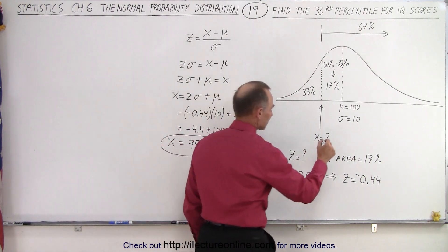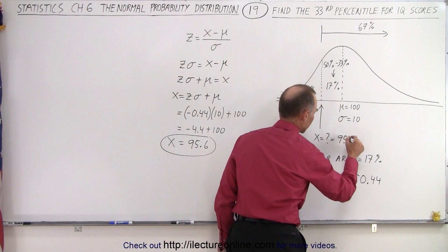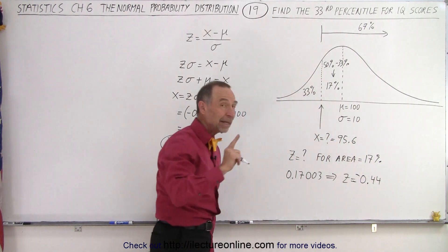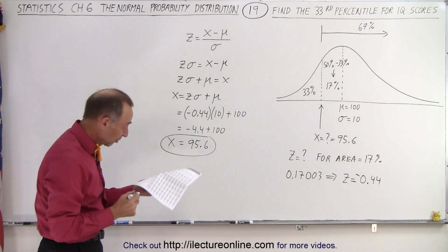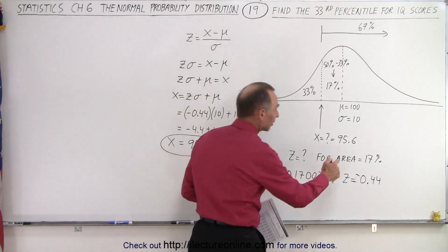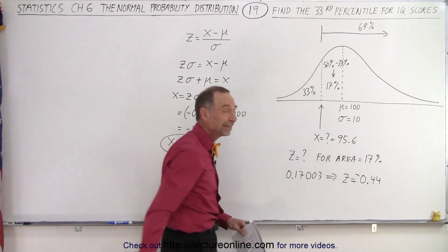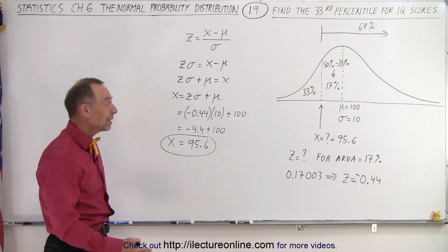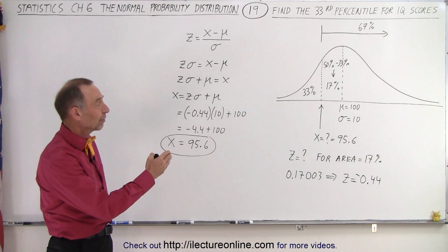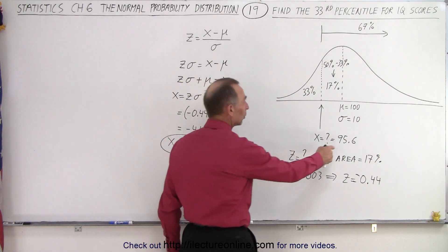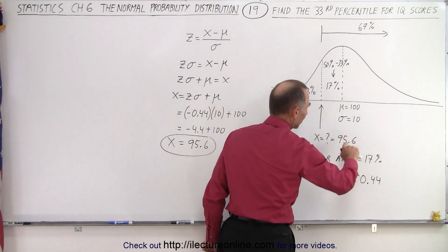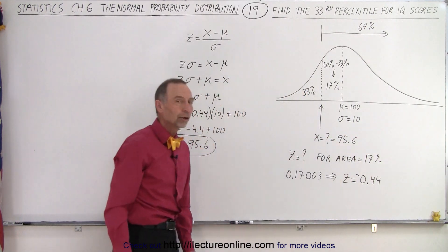In other words, that means that at the 33rd percentile for IQ scores, you can expect the value of IQ between 95 and 96. That means that 33% of the population has an IQ lower than this, and 67% of the population has an IQ larger than that.